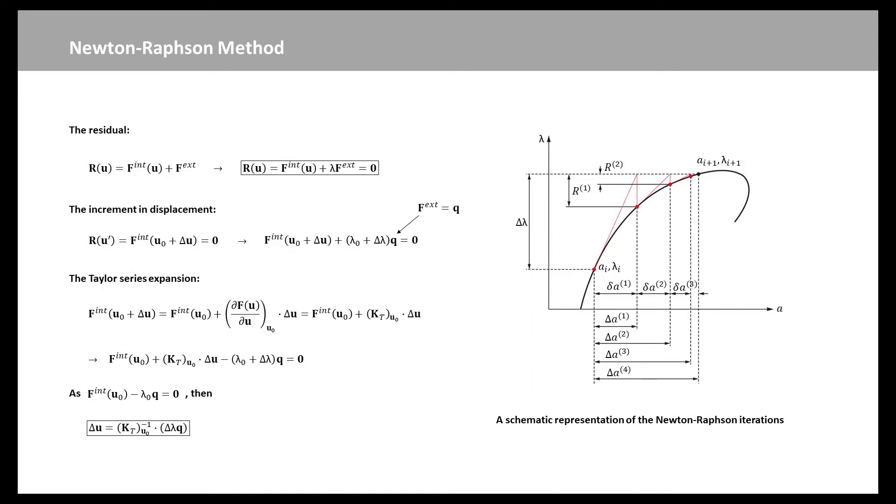Suppose that the last converged solution is u₀ and lambda₀. The load increment is initiated by postulating lambda' equal to lambda₀ plus delta lambda, where delta lambda is a non-predefined incrementation parameter.